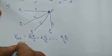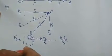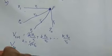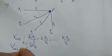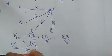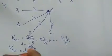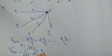Since K equals 1 by 4 pi epsilon-zero, we take that as a common factor outside. So V total equals 1 by 4 pi epsilon-zero, multiplied by the summation from i equals 1 to N of Qi divided by Ri.